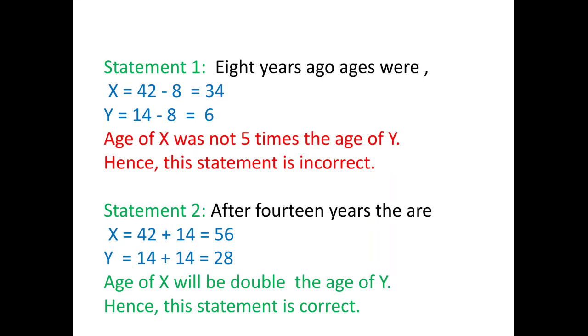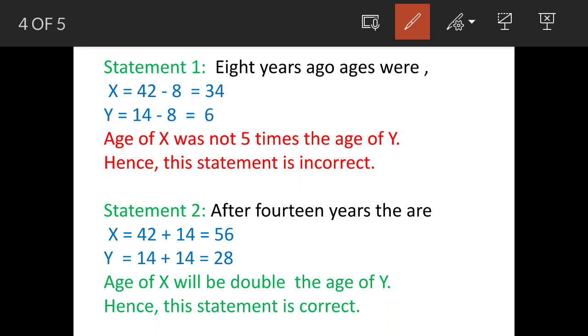Now statement 1, 8 years ago, the ages were 42 minus 8 equals 34 and Y's age will be 14 minus 8 equals 6. So actually age of X is not 5 times of Y. So this statement is not correct.